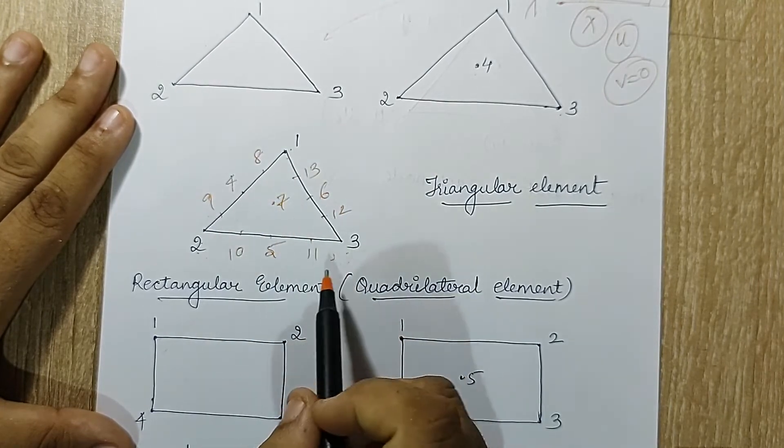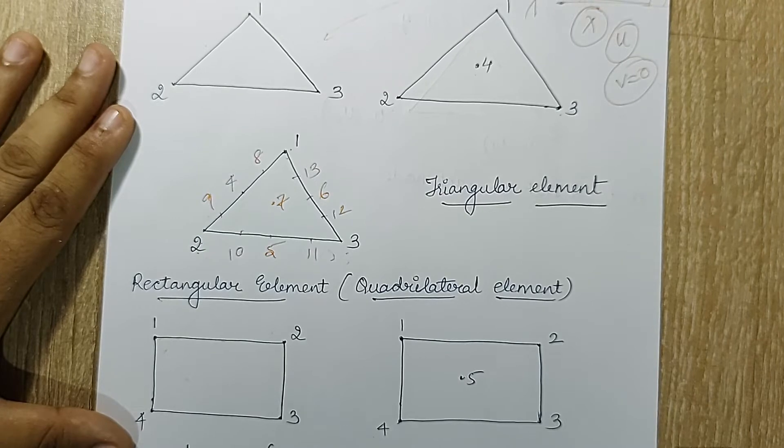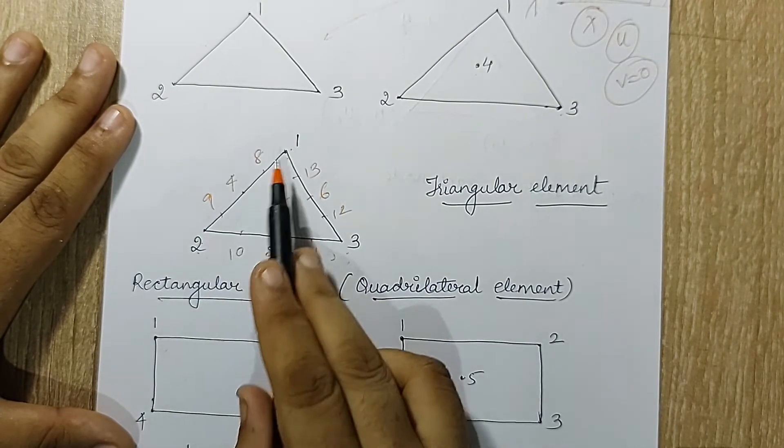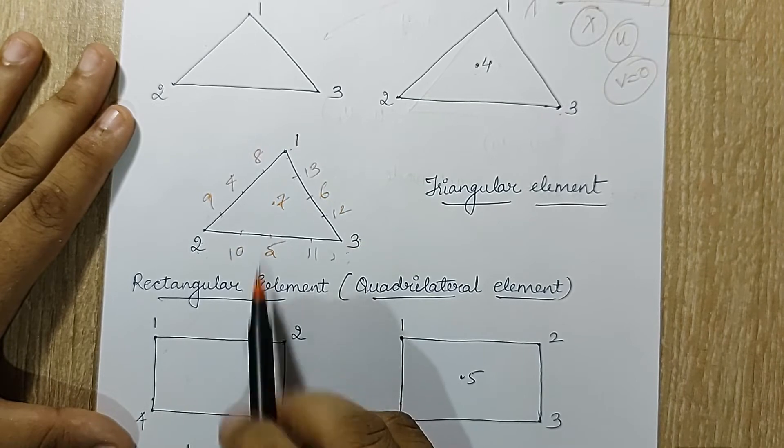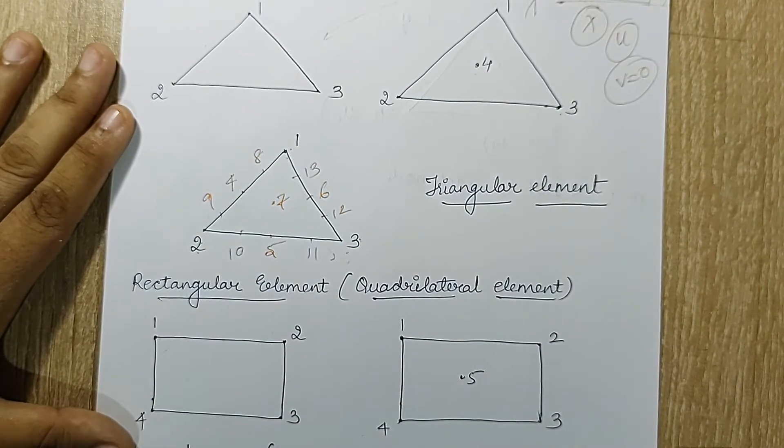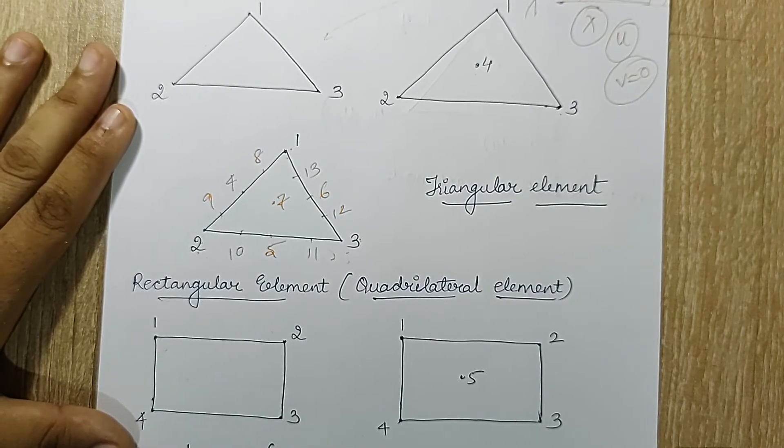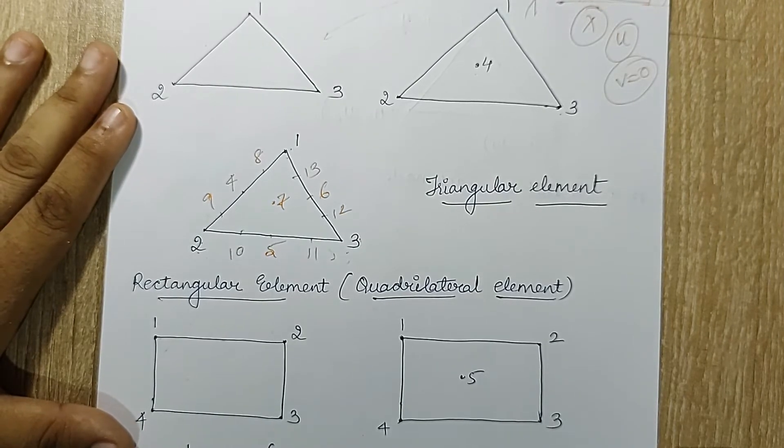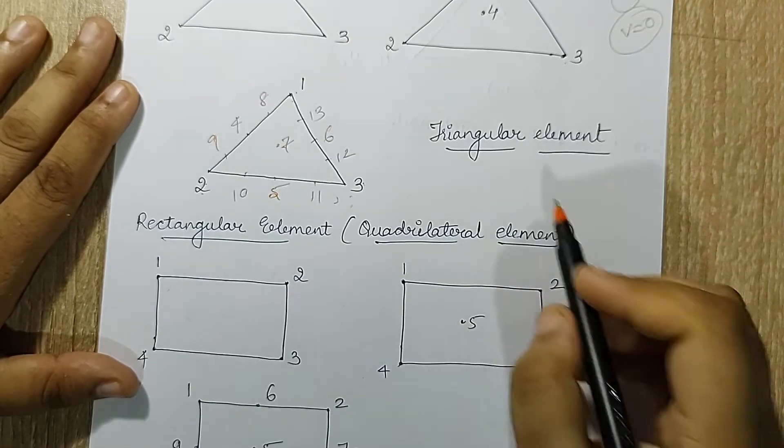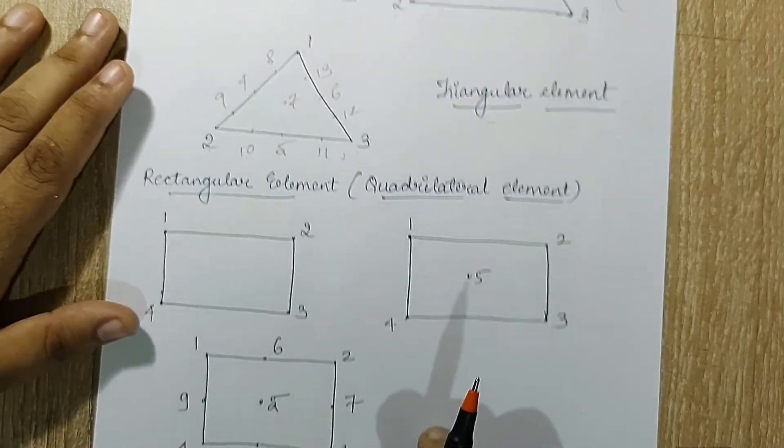When you keep on increasing number of nodes, you can get more number of displacements on this particular element. When you are getting more number of displacements, you are getting a better solution. Rather than getting just three solutions at three corners of an element, you are zooming into the entire body and trying to find out minor levels of displacements. When you increase the number of nodes, you are increasing the efficiency of your solution.